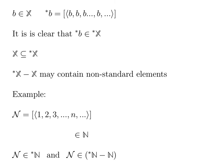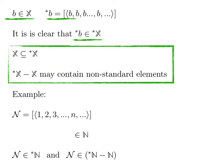Take b, an element of X. Then the extension of b, which we call star b, is clearly an element of star X. We conclude that X is therefore a subset of the enlargement star X, just like R is a subset of star R. Therefore, if we want to look for non-standard elements, we need to look at the elements in star X which are not in X.